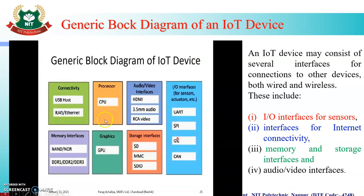Next is the Generic Block Diagram of IoT Devices. This diagram gives you the idea of wired and wireless connections of Internet Devices. The interfaces include: IO Interfaces for Sensors, Interfaces for Internet Connectivity, Memory and Storage Interfaces, and Audio Video Interfaces.